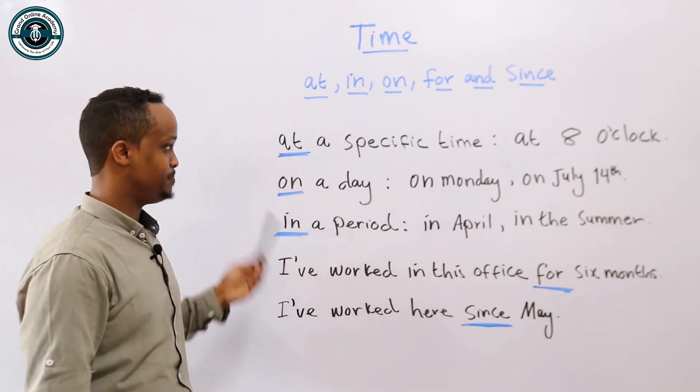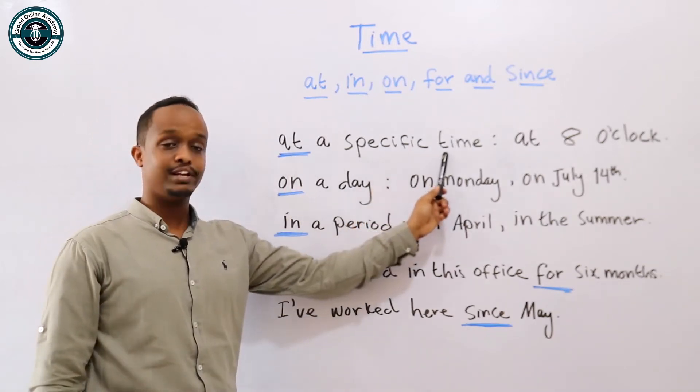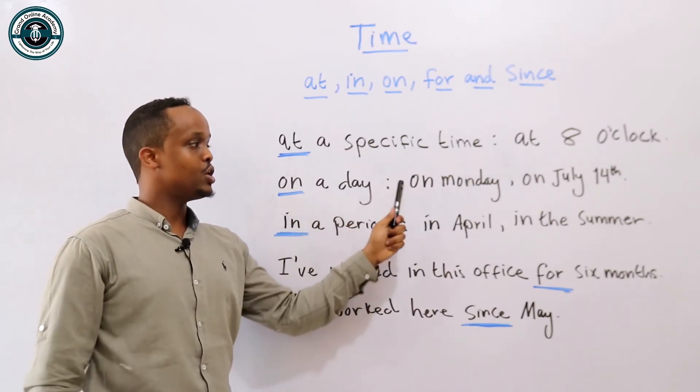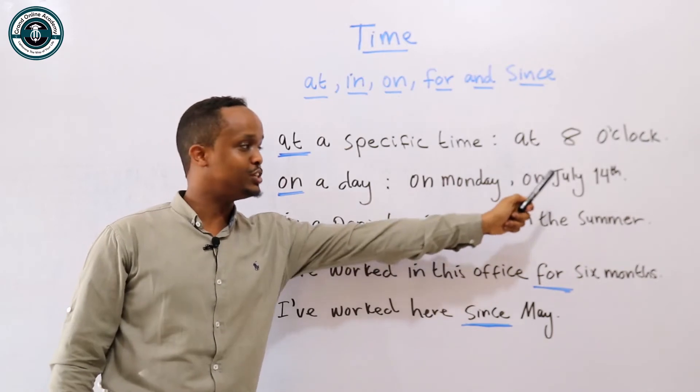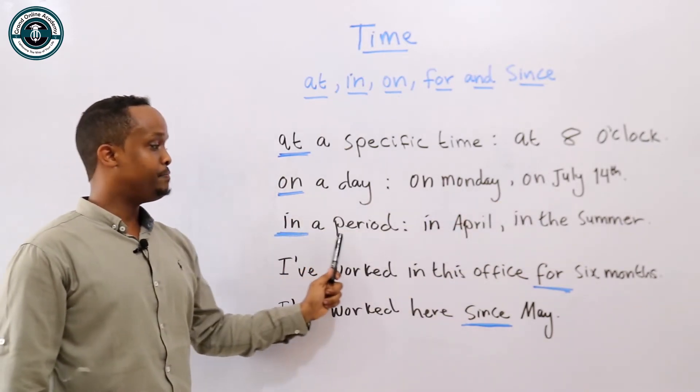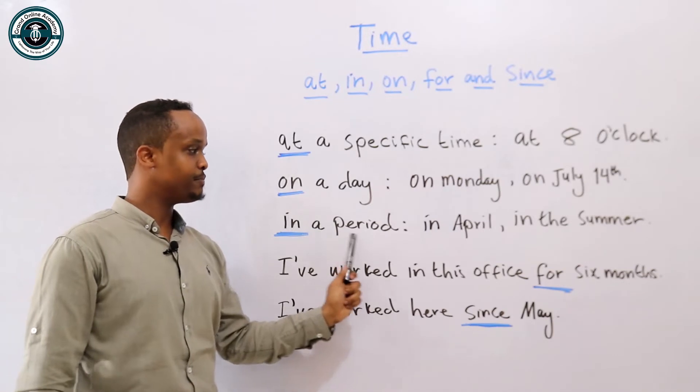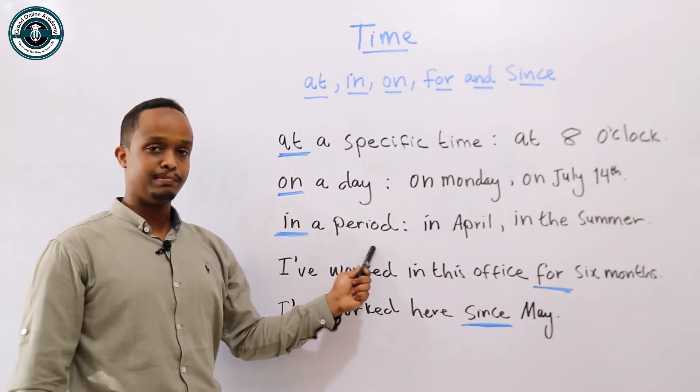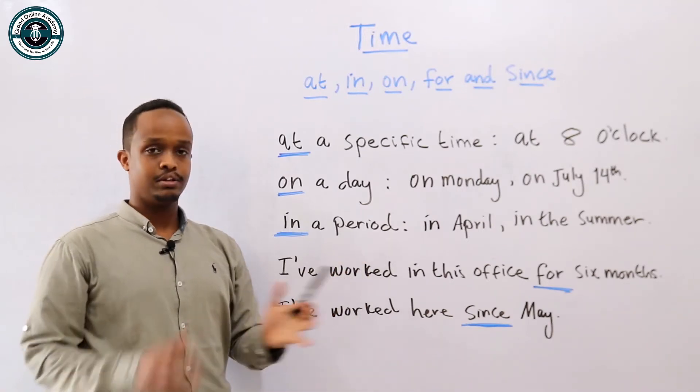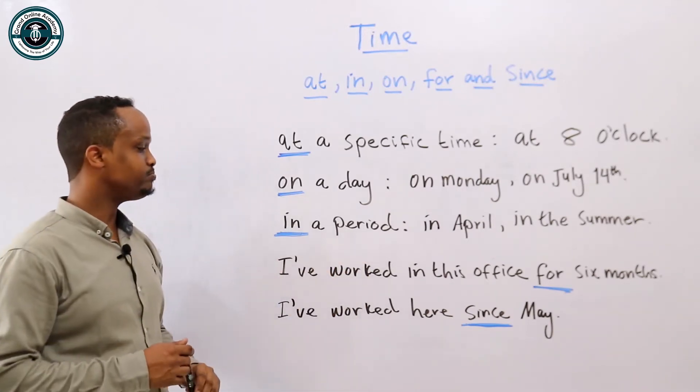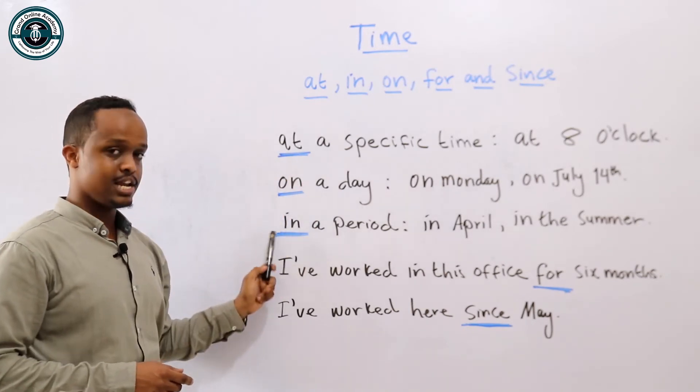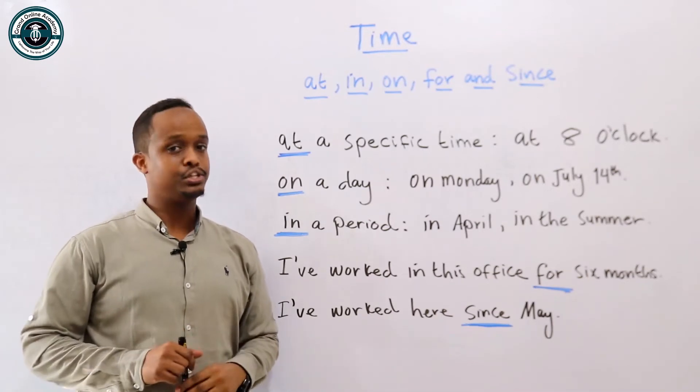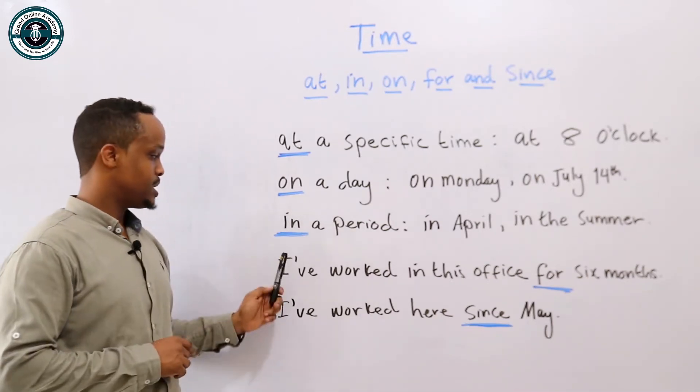At, on, in. At is for a specific time: at eight o'clock. On is for a day: on Monday, on July 14th. In is for a period: in April, in the summer. I think you understand that, and after this lesson you'll be able to use them in the correct way.